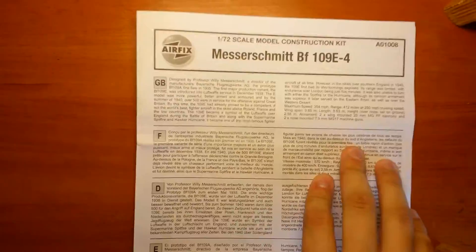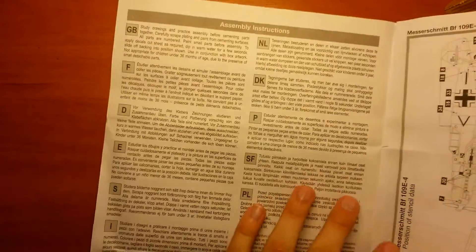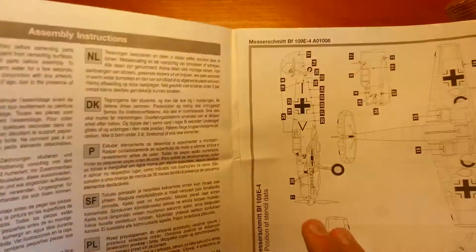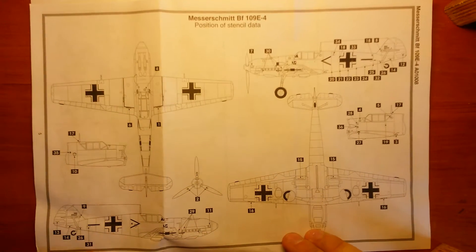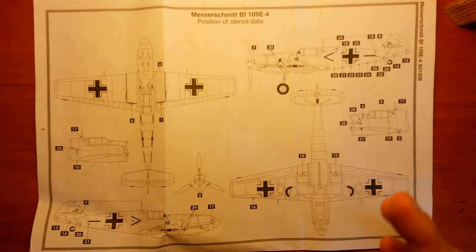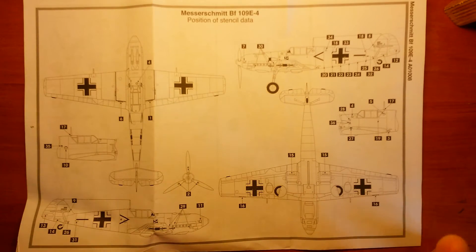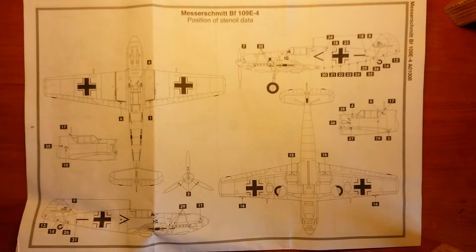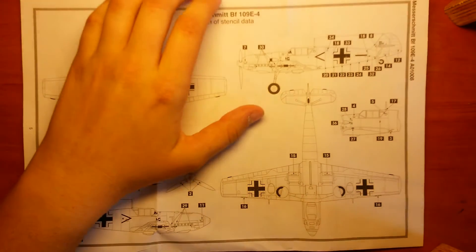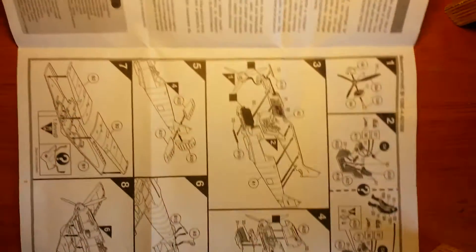Let's take a look at the instructions. Brief history lesson about the aircraft itself and assembly instructions. Left down there, this one is pretty good, position of stencil data. What I really like about it, on these colored schemes, stencil makes everything colored and you get it wrong sometimes. You need to look up some other models or something, but on this model you have nice instructions for that.